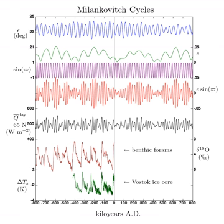Although the obliquity studied is more extreme than Earth ever experiences, there are scenarios 1.5 to 4.5 billion years from now, as the Moon's stabilizing effect lessens, where obliquity could leave its current range and the poles could eventually point almost directly at the Sun.